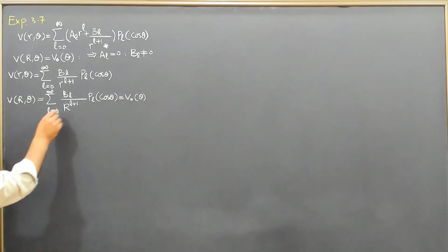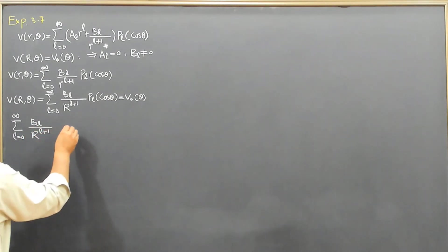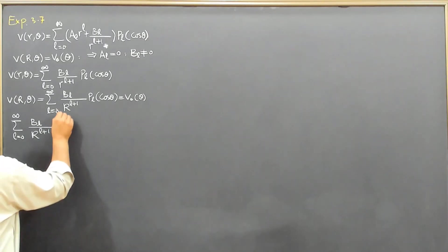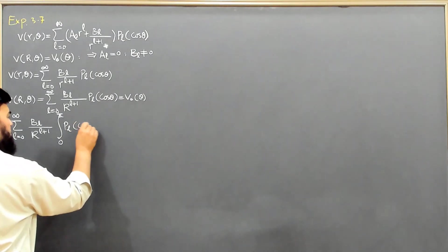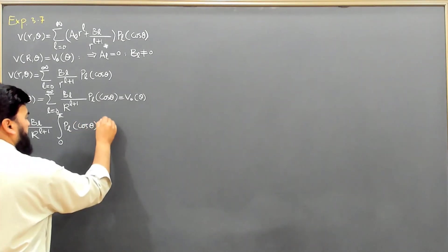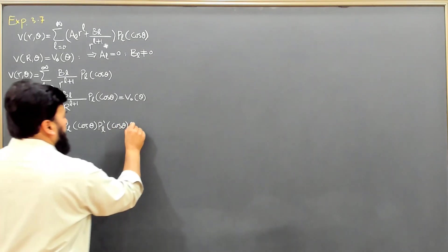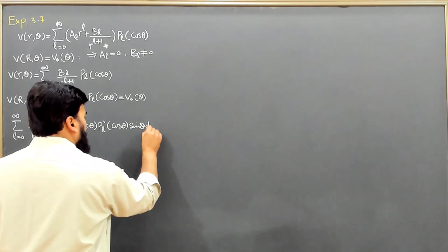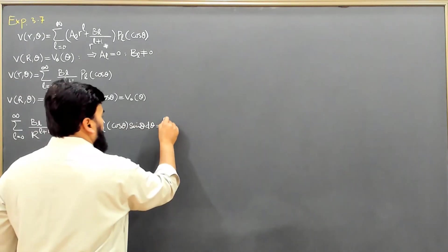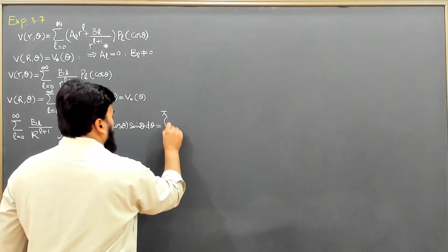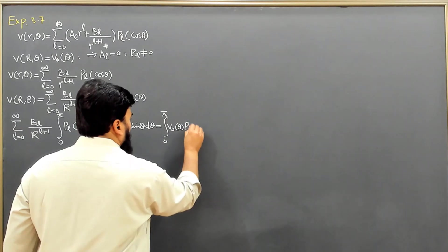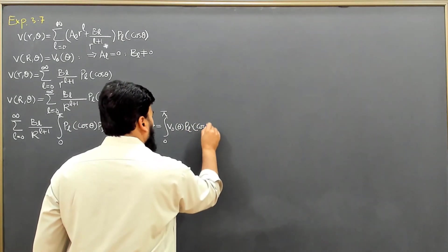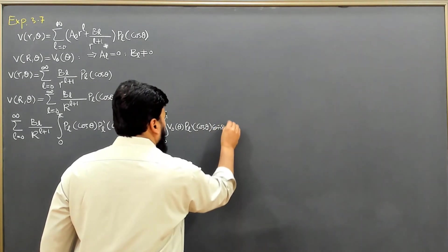So it will be summation on L from 0 to infinity: BL/R^(L+1) times the integral from 0 to π of PL(cos θ)·PL'(cos θ)·sin θ dθ. This equals the integral from 0 to π of V₀(θ)·PL'(cos θ)·sin θ dθ.